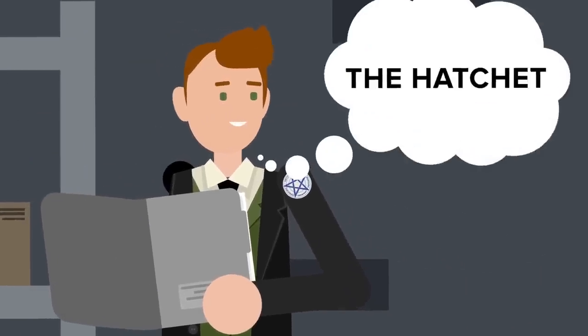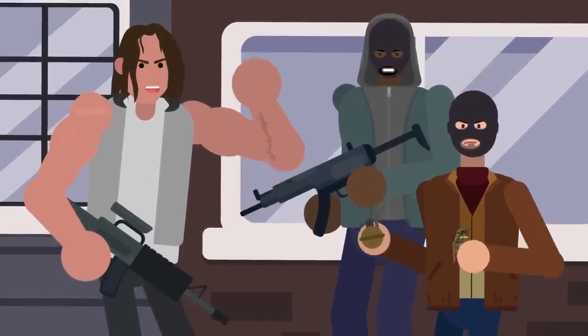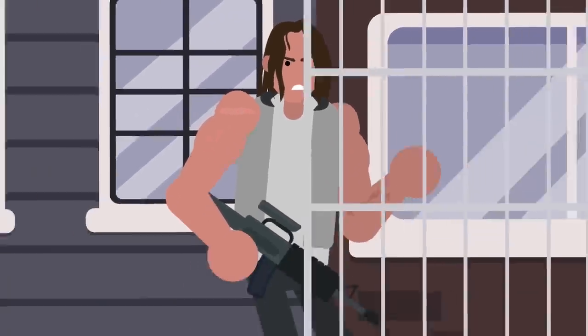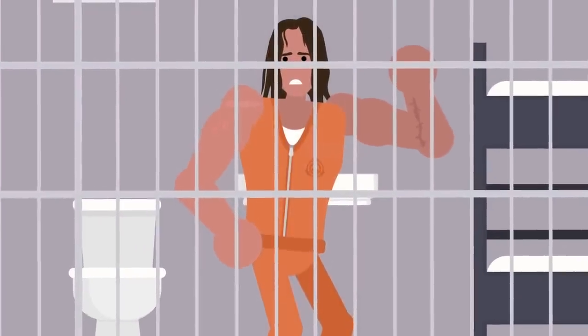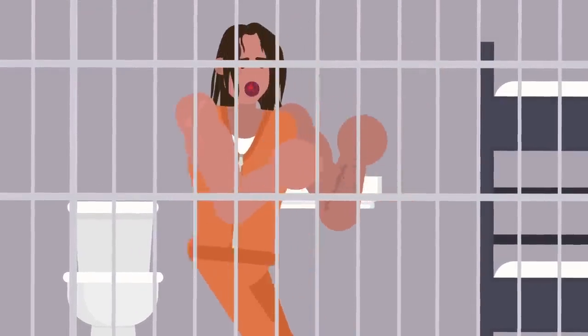The true identity of a man codenamed The Hatchet, a mass murderer responsible for coordinating multiple acts of international terrorism. But to Agent Lane, this man wasn't a threat to be feared. He was bait in a trap for something far worse.